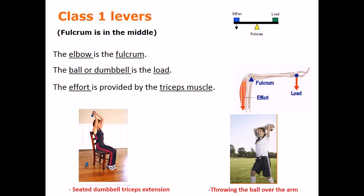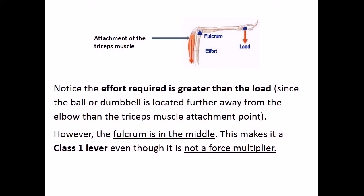Class 1 levers. Fulcrum is in the middle. The elbow is the fulcrum. The ball or dumbbell is the load. The effort is provided by the triceps muscle. Throwing the ball over the arm. Seated dumbbell triceps extension. Notice the effort required is greater than the load since the ball or dumbbell is located further away from the elbow than the triceps muscle attachment point.